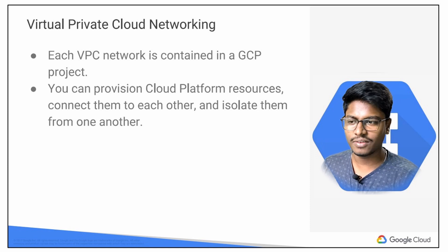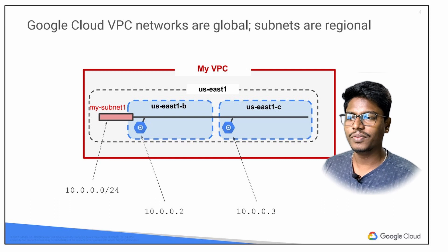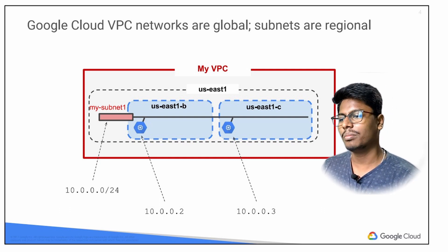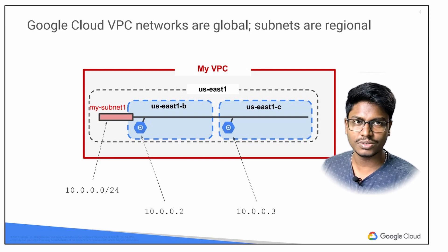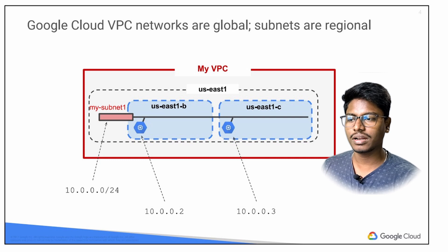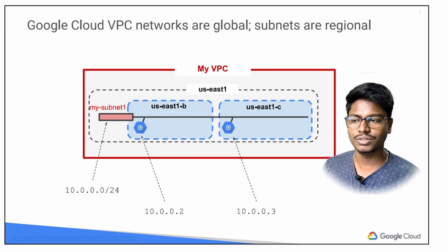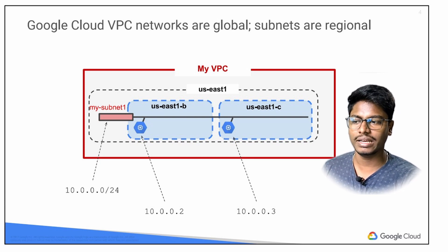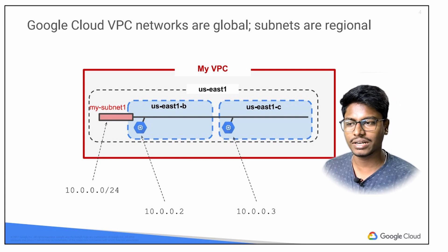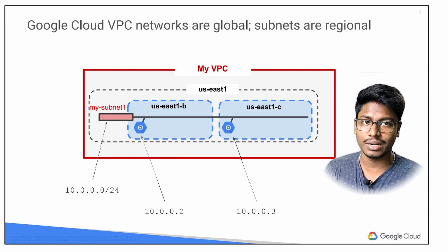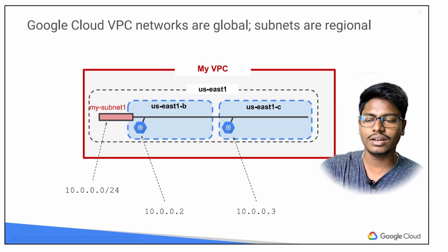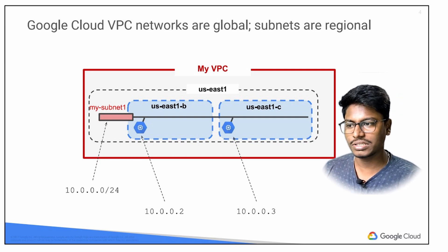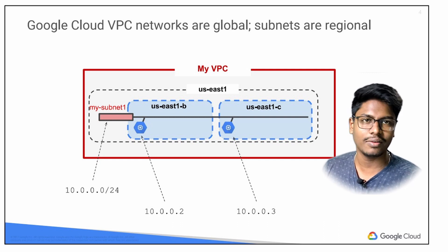Firewall rules are mostly at the VM level. VPC network is global; subnets are regional. We already talked about regional concepts — there are regions and zones. For example, US East 1 is a region, and US East 1B and US East 1C are two different zones. There are subnets, and you can connect all these zones. If you have a region, you can connect it. VPC is a global service.